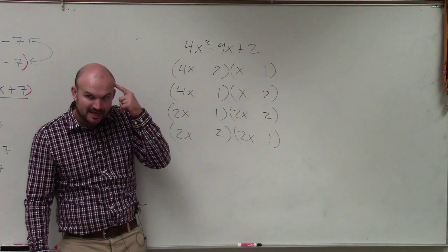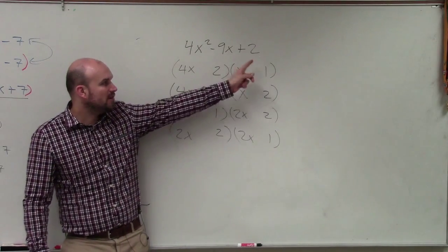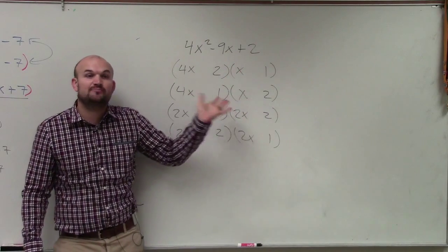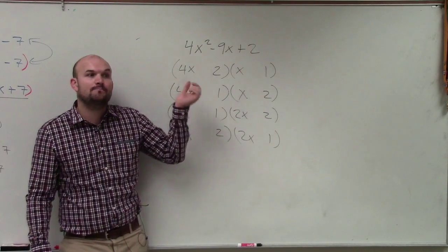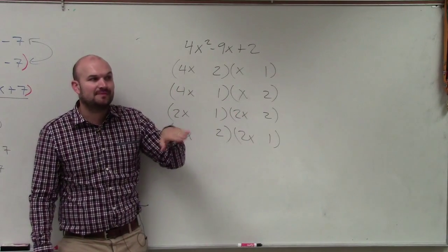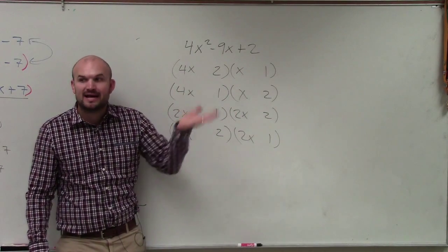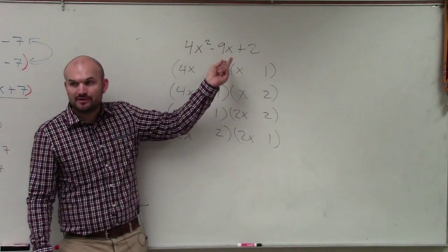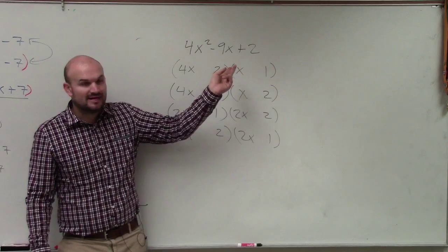Now, there's a couple of things we need to understand. When you are multiplying them, that's giving you a positive number. So either both of my numbers have to be positive, or both of them have to be negative. However, when I add my middle and my outer, I have a negative number, right? So I need to get negatives from somewhere.